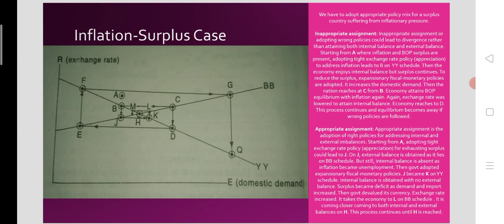In the diagram, domestic demand is measured along the horizontal axis — higher domestic demand means higher inflation on one hand and higher imports on the other. Exchange rate is measured along the vertical axis. A higher exchange rate means foreign demand for domestic commodities is greater as the domestic currency is weaker. A lower exchange rate means the domestic currency is stronger, so foreign demand for domestic commodities will be lower.